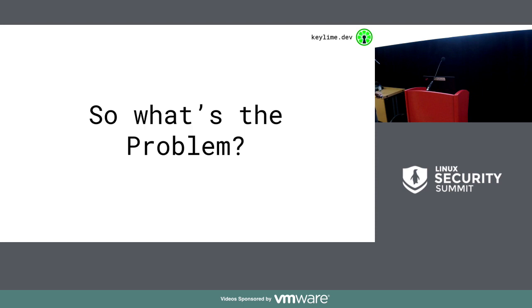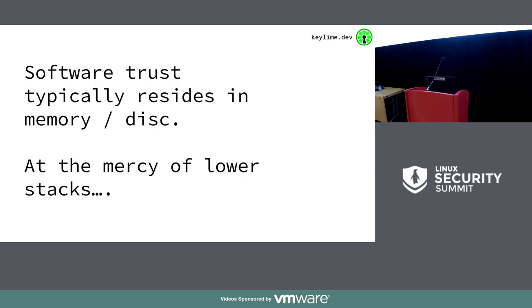So what is the problem? Without a hardware means of protection, software trust typically resides in memory or on disk — we're talking about private keys, secrets, and so forth. The problem is you're then at the mercy of the lower levels of the stack. We're talking about a chain of trust: firmware, bootloader, kernel, modules.